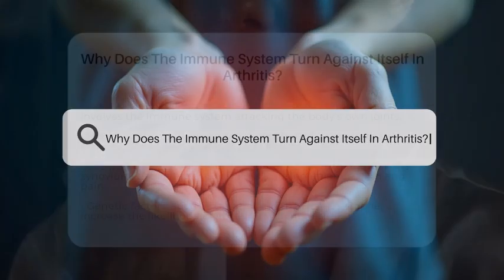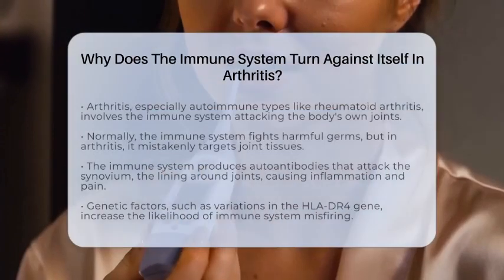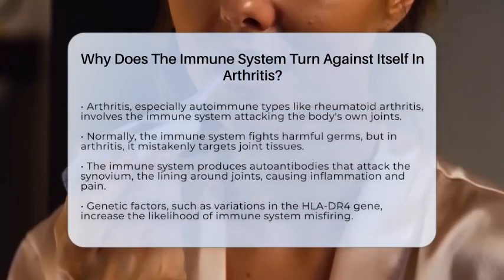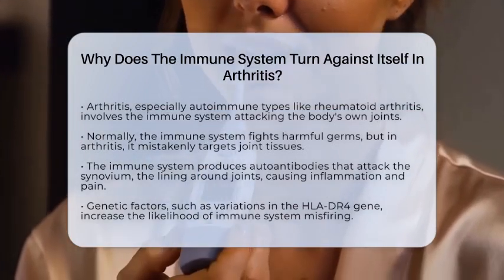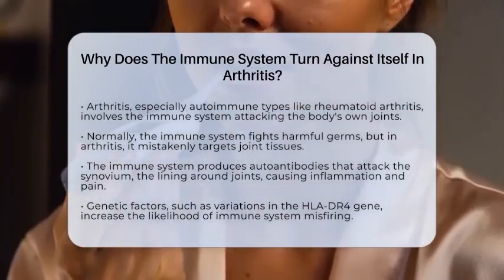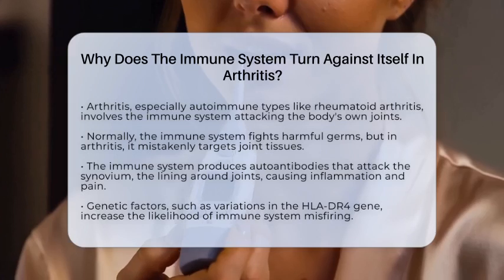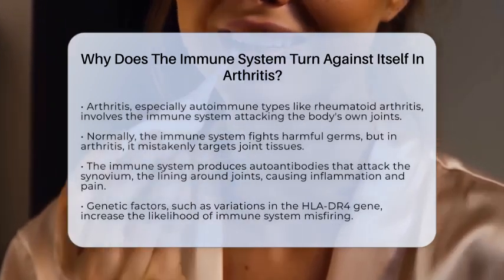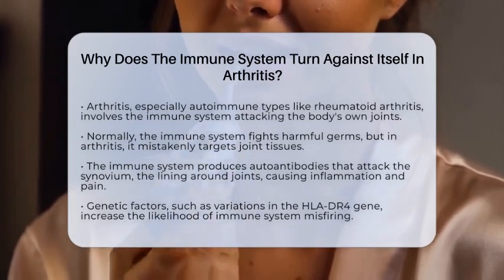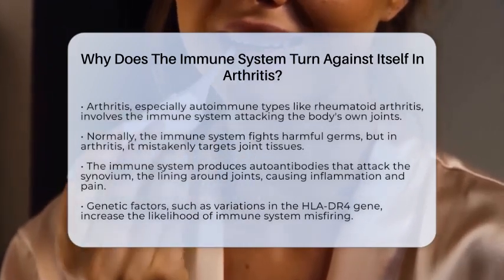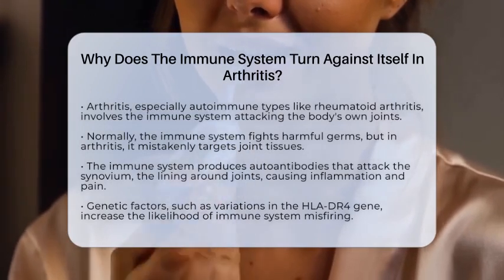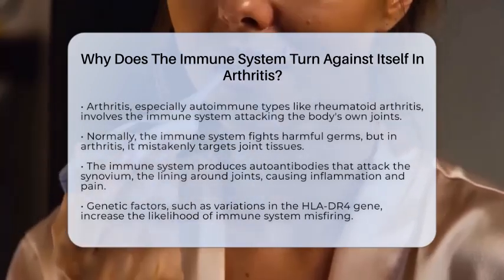Why does the immune system turn against itself in arthritis? Imagine your body's defense team suddenly mistaking your own joints for enemies. That's what happens in arthritis, especially the autoimmune types like rheumatoid arthritis. Instead of fighting harmful germs, the immune system starts attacking the tissues in your joints. This mix-up happens because the immune system loses its ability to tell the difference between what's foreign and what's part of your body.